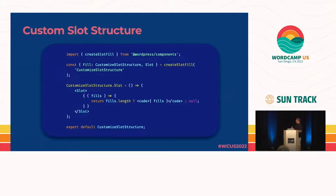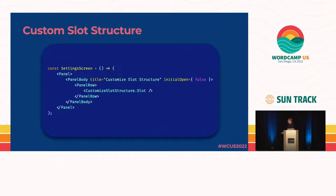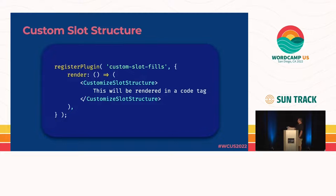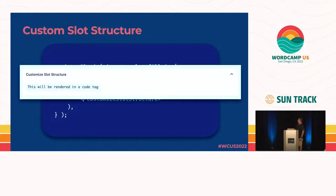Custom slot structure: we can also customize the slot so it wraps all the fills. In this case, we're getting all the fills passed to our function, checking the length — if there are fills, we wrap them all in a code block; otherwise we return null so nothing renders. We just expose the slot as normal, and the content will be rendered inside a code tag.